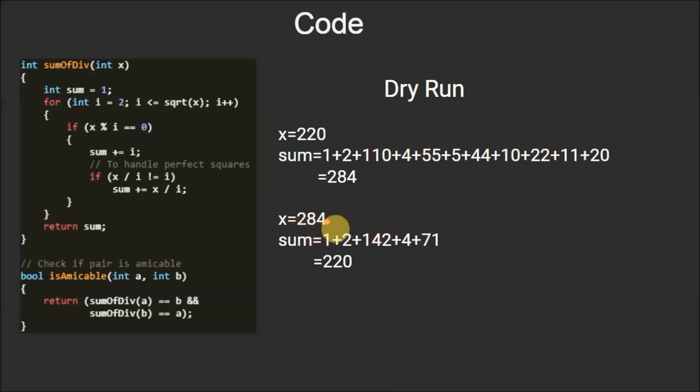So if the value of x is 284, the sum will be 1 plus 2 plus 142 plus 4 plus 71. Similarly, as the first divisor is 2, its divisor pair is 142. So these both are added. And the sum finally will be equal to 220.